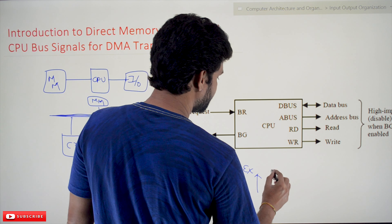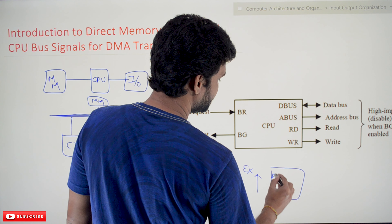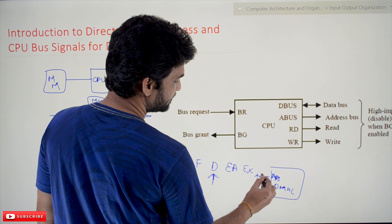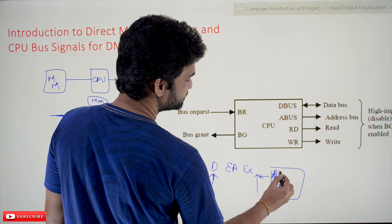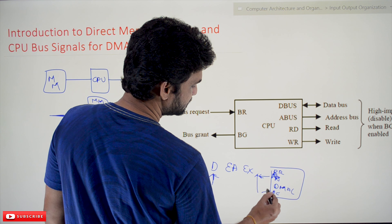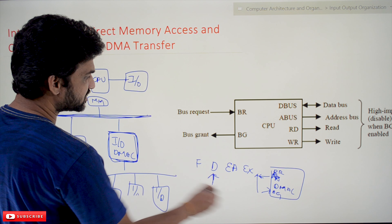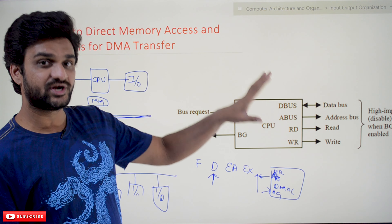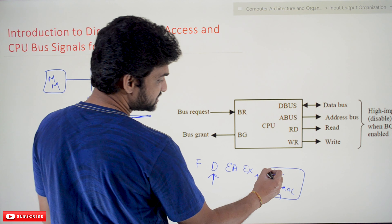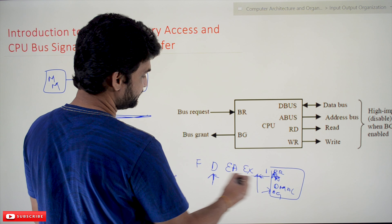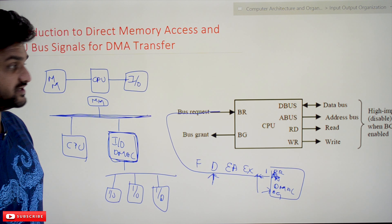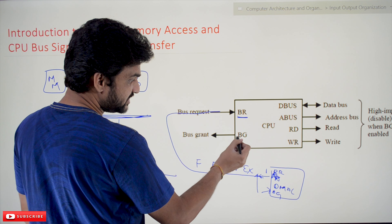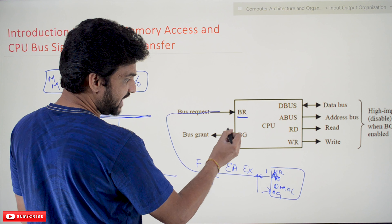How they work: consider a DMA controller that also has bus request and bus grant pins. These are connected to the CPU. Whenever there is an interrupt by an I/O device, the bus request will be activated and transferred to the CPU's bus request pin. With that, the CPU identifies the bus request and activates the bus grant signal.